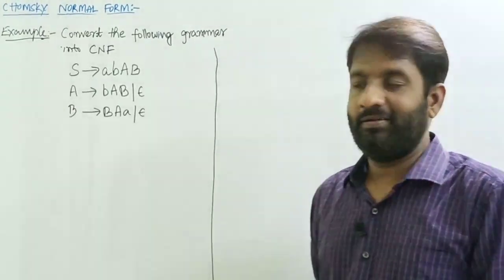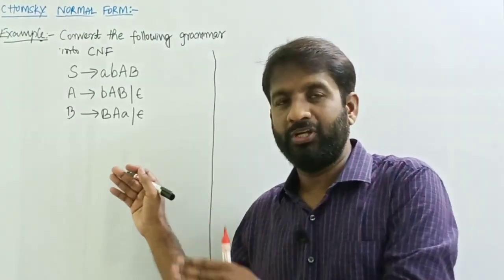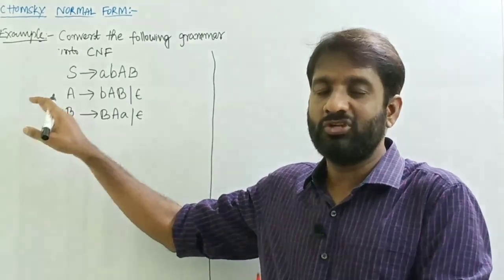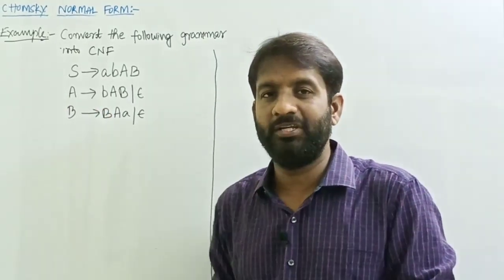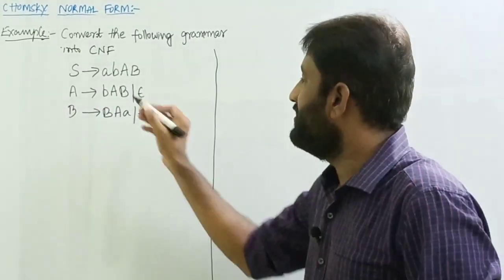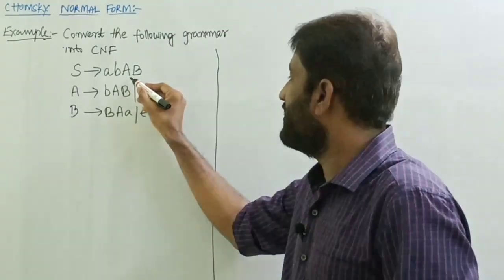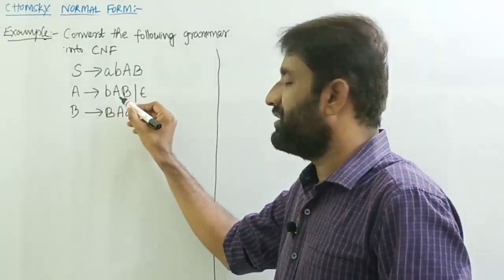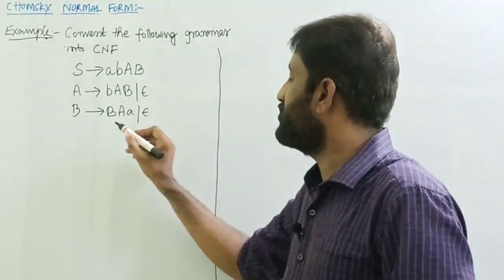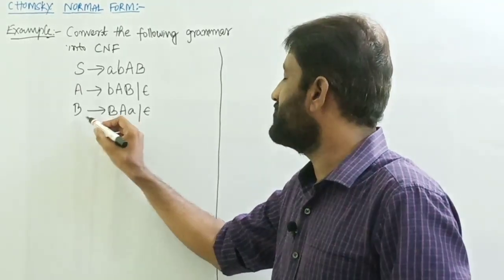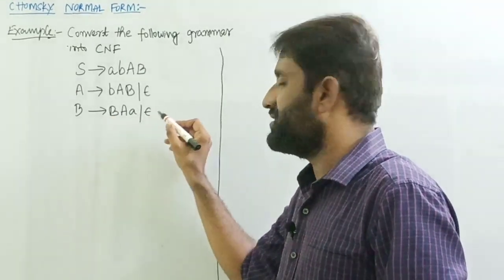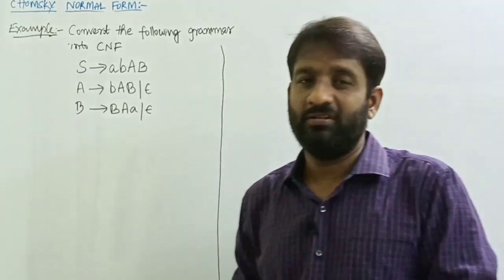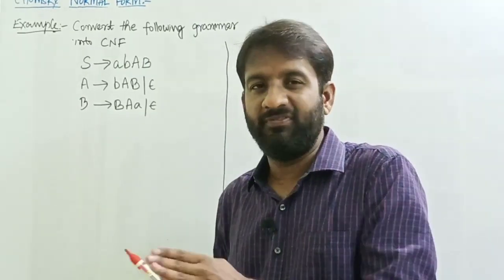Welcome back. Let's take one more example of how to convert a grammar into Chomsky Normal Form. The given grammar is: S tends to aB | AB | A, A tends to BAB | epsilon, B tends to a | epsilon.